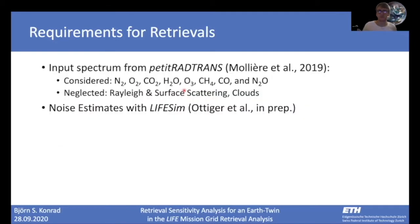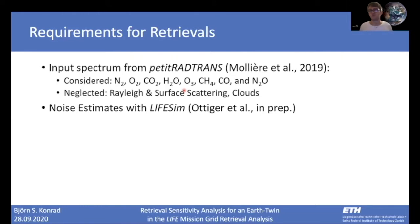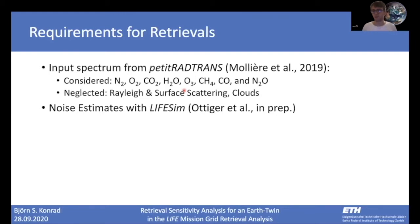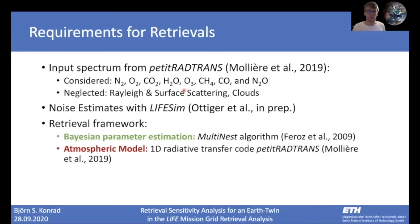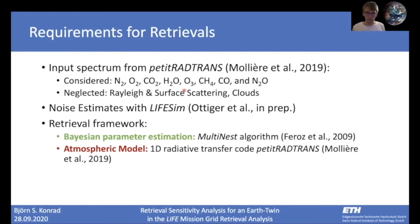Additionally, we need a method of estimating the noise in observations with LIFE, and for this we use the LIFEsim tool, which is also the work of another master's student here at ETH, Maurice Ottinger. The LIFEsim tool considers contributions to observational noise from local zodiacal dust, exo-zodiacal dust, as well as stellar leakage. And finally we need a retrieval framework: our retrieval framework is based on the nested sampling Bayesian parameter estimation scheme and uses the 1D radiative transfer model PIRTIRATRANS.